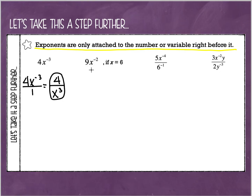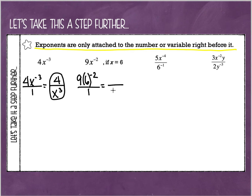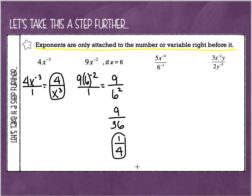This next example asks us to evaluate 9x to the negative 2nd, where x equals 6. I'm going to first substitute 6 into the expression — I always like to put that in parentheses. Now I'll make it a fraction and get rid of that negative exponent. The negative 2 is only attached to the 6, so when I move it down to the denominator the 6 comes with it, but not the 9 — the 9 stays on top. Now I can evaluate: 9 over 6 to the 2nd power is 9 over 36, which simplifies to 1 over 4.